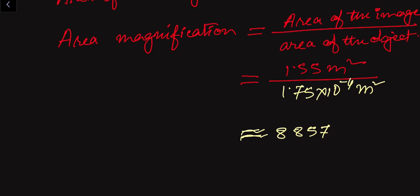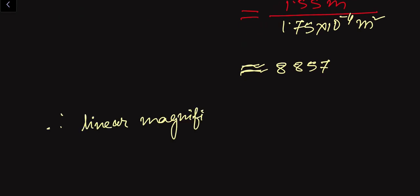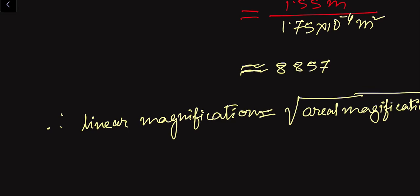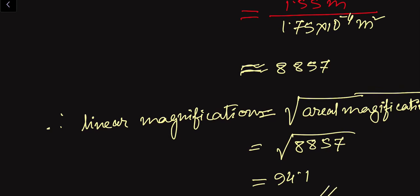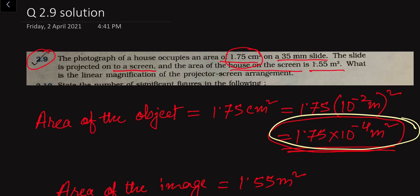Since this is the area magnification, to find the linear magnification we take the square root of the area magnification. Therefore, linear magnification equals the square root of 8857, which equals 94.1. This is the solution to problem number 2.9 from chapter number 2.